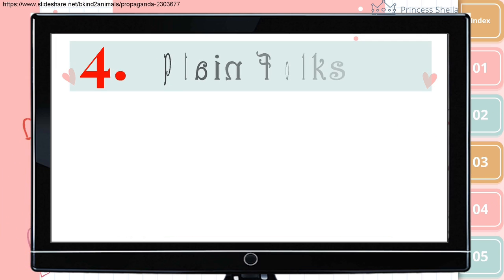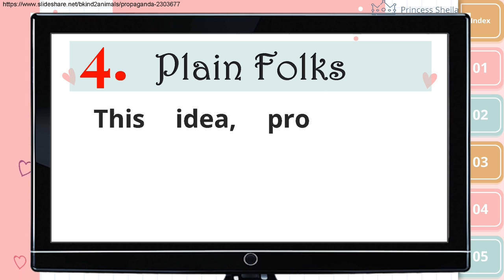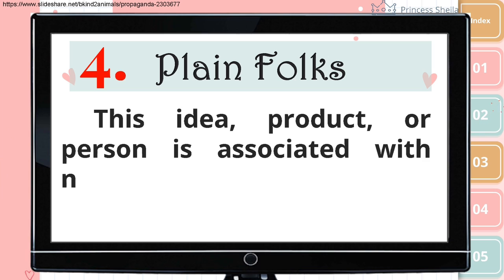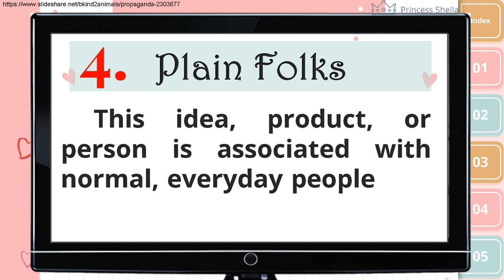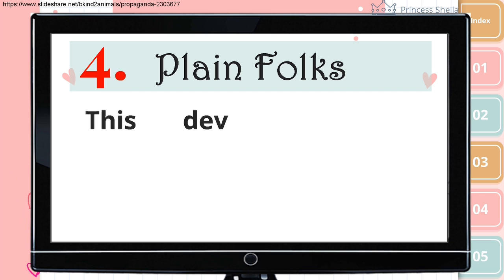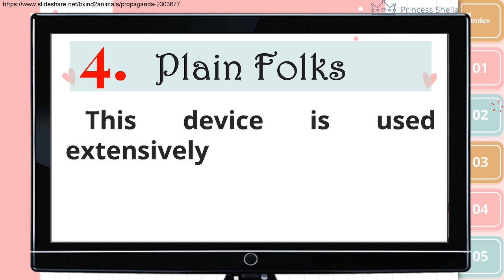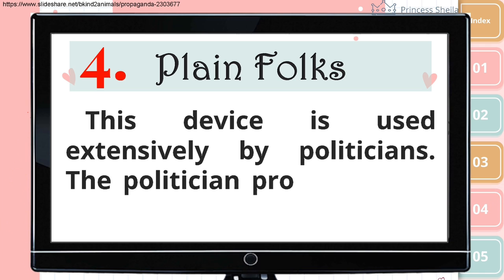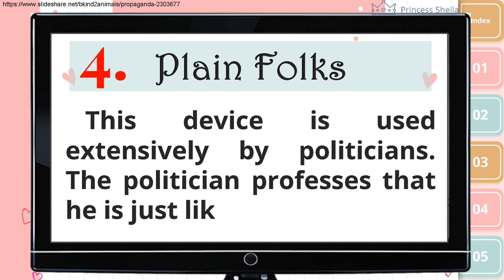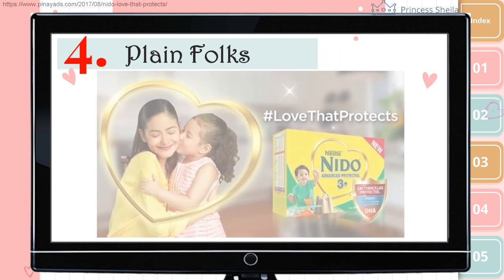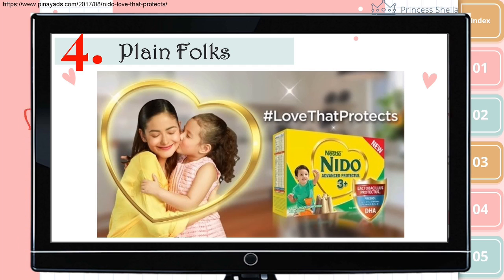Fourth is plain folks. This idea, product, or person is associated with normal, everyday people and activities. This device is used extensively by politicians. The politician professes that he is just like others. Take a look at this advertisement — it is the perfect example of showing regular, ordinary people. It shows that a mother's love is unconditional and she is searching for ways to protect her child, and that this product is her best choice.